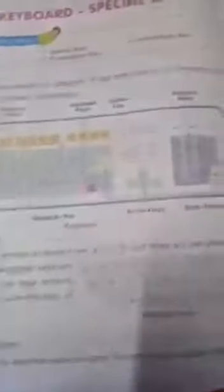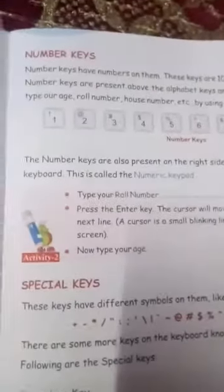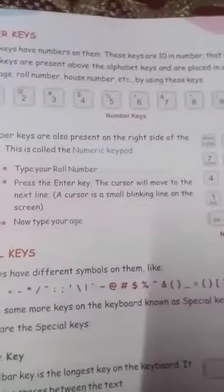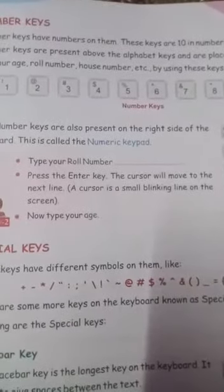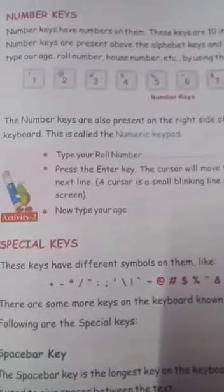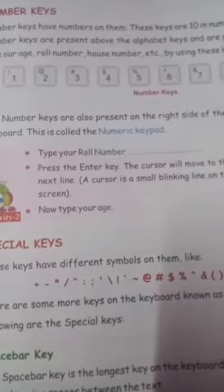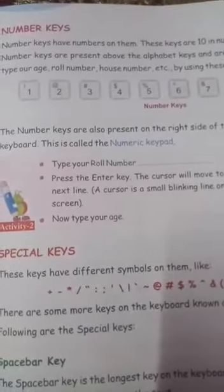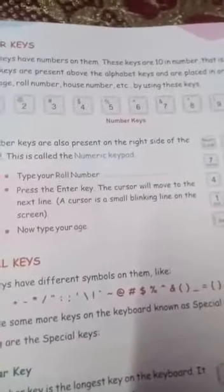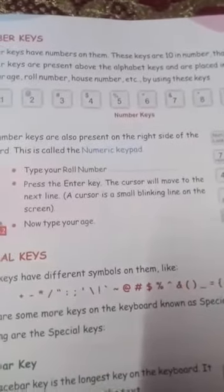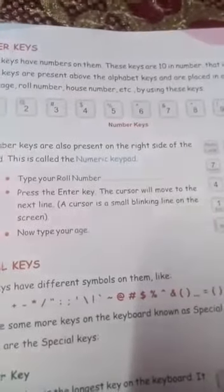Next, children, all of you look at page number 35. Number keys — number keys are 10 in number. They are from 0 to 9. You can find number keys above the alphabet keys and also on the right side of the keyboard. That is called the numeric keypad. Can you tell me what is the use of number keys? With the number keys we can type our age, roll number, house number, etc. If we want to type any numbers, we can use these number keys.